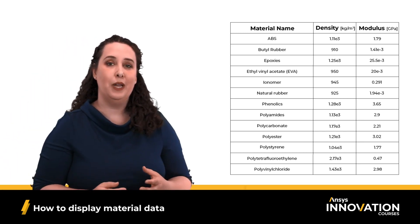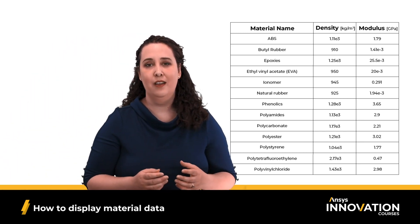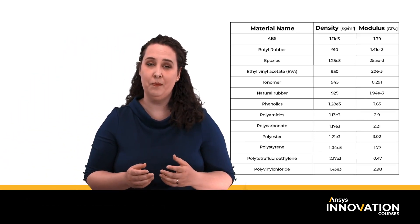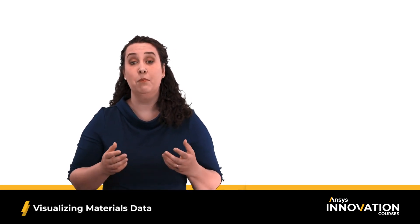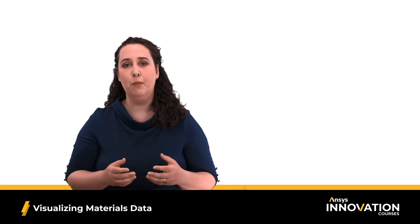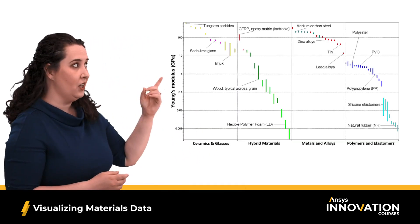What if there was a better way to do this? A more visual way? When material data is displayed in sheets and tables, we're simply seeing numbers and words. When choosing materials, we need to find the meaning within these numbers. A way to give these numbers meaning is by plotting the data in a material property chart, such as the bar chart that you can see here on the screen.